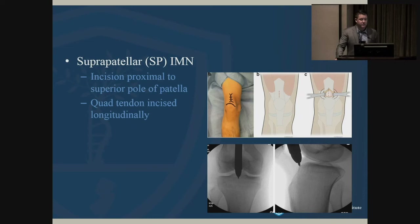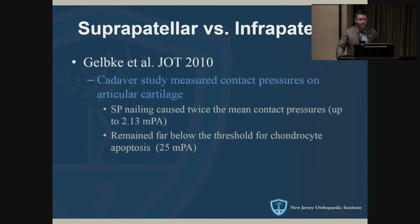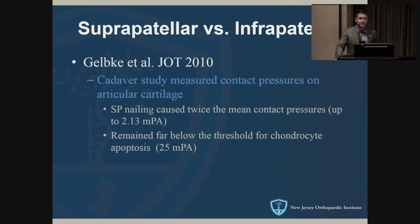The suprapatellar incision is just superior to the patella, in line with the quad tendon. One concern with putting the nail behind the patella is cartilage injury. A cadaver study looking at contact pressures found that the pressure on chondrocytes was less than what would cause apoptosis.